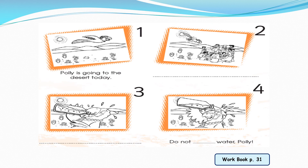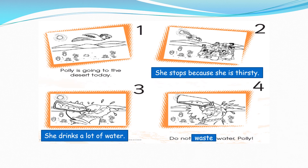Look at the four pictures. Picture one: Polly is going to the desert today. Picture two: She stops because she's thirsty. Picture three: She drinks a lot of water. Picture four: Don't waste water, Polly. Let's read the complete story again: Polly is going to the desert today. She stops because she's thirsty. She drinks a lot of water. Don't waste water, Polly.